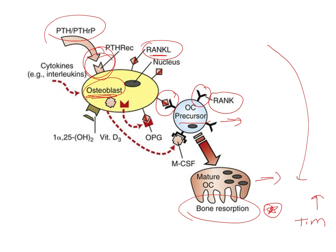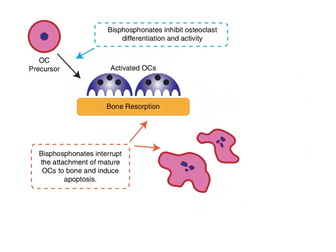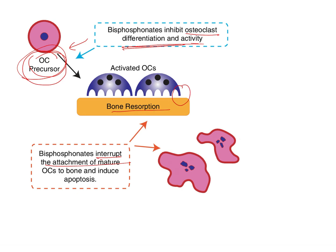Bisphosphonates are a class of drugs utilized when there is osteoporosis, in patients who have reduced bone density, to prevent further bone resorption. Bisphosphonates affect osteoclasts in two ways: if the osteoclast has not yet matured, bisphosphonates inhibit differentiation of the precursor cell. If the osteoclast has already matured, bisphosphonates interrupt the attachment of the mature osteoclast to the bone surface, thereby preventing bone resorption.